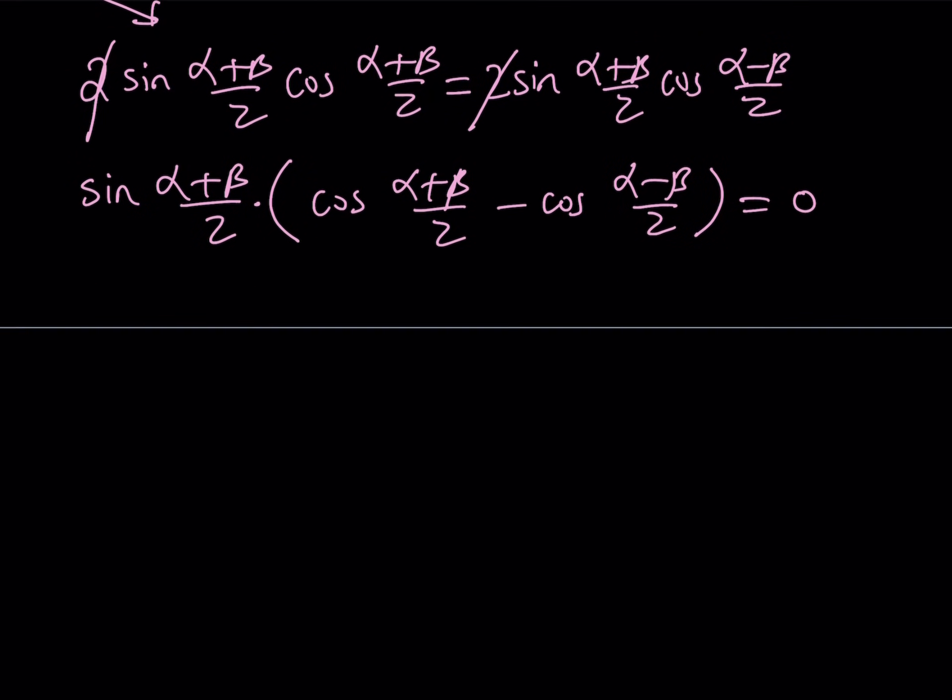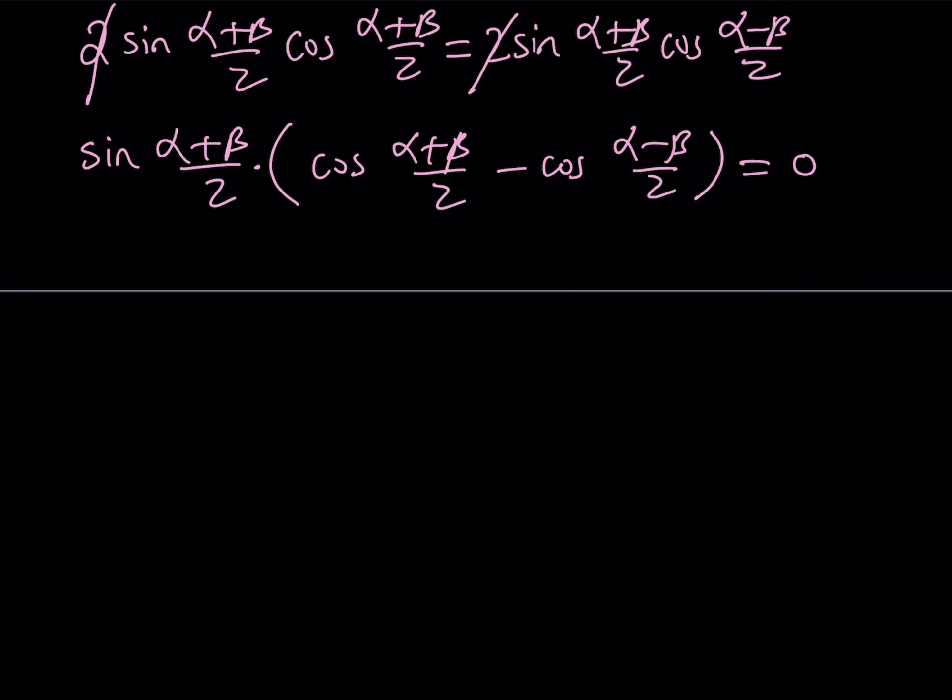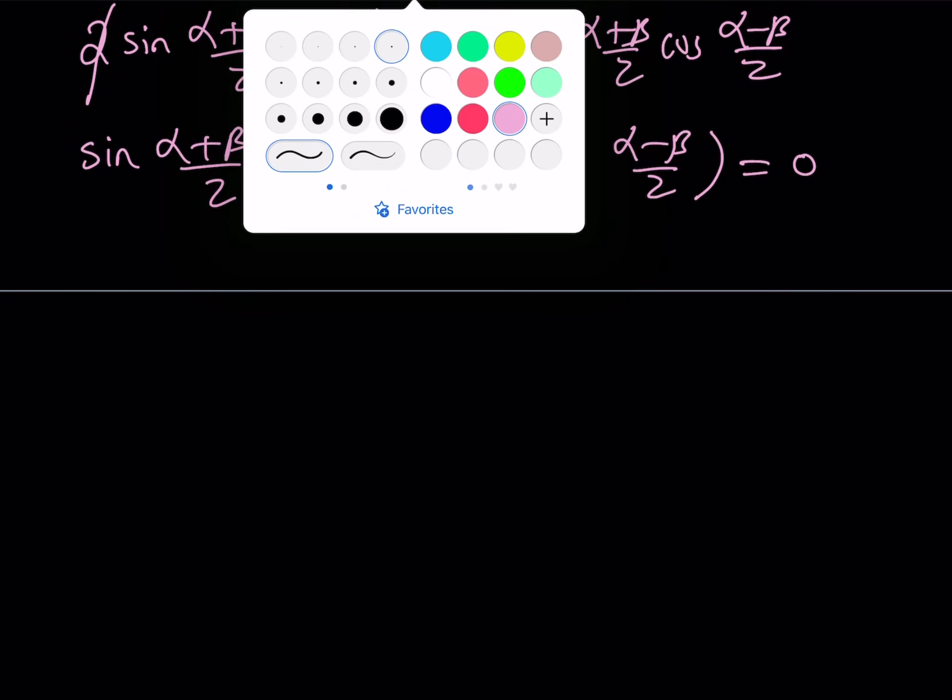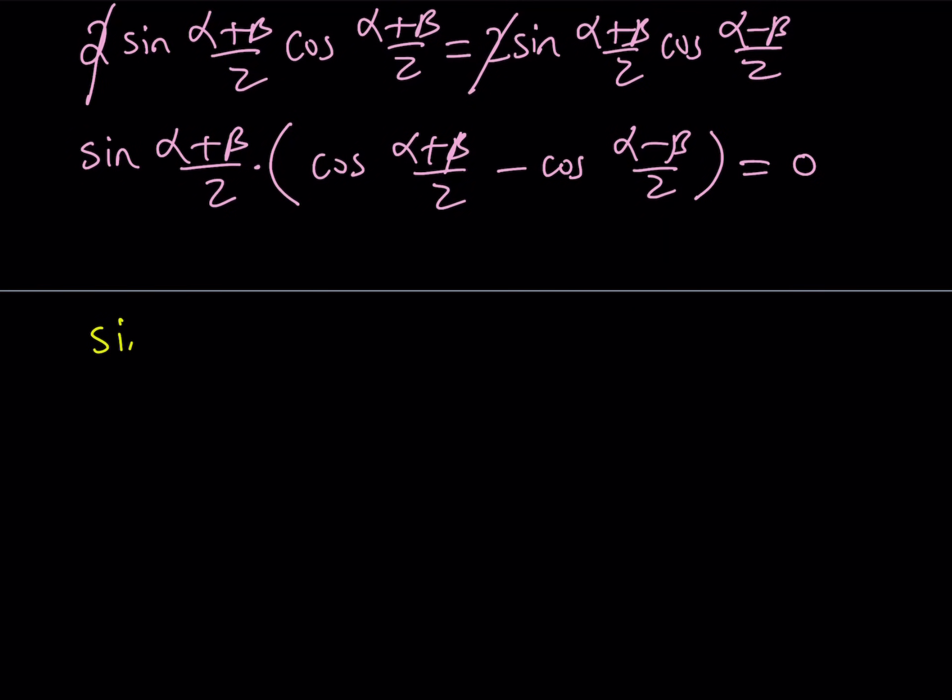Therefore, each factor can be set equal to 0. Let's go ahead and look at the first one. If sine alpha plus beta over 2 is equal to 0, this implies that alpha plus beta over 2 can be written as n pi, where n is an integer. For our purposes, n, k, whatever we use, those variables are all going to be integers. Obviously, I want to find particular solutions here, but this is the general solution. From here, you can safely say that alpha plus beta is 2n pi.